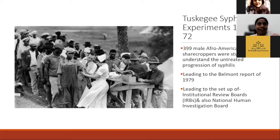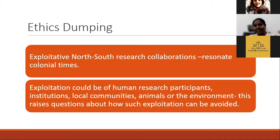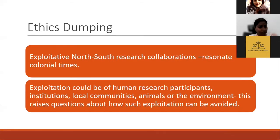This study led to the setting up of institutional review boards across the United States and the National Human Investigation Board. It is a hallmark study indicating why a certain population does not trust medical research — because they have already had the history of being experimented upon. This study also led to the Belmont Report of 1979. This is not very far away; it's not 100 years back.